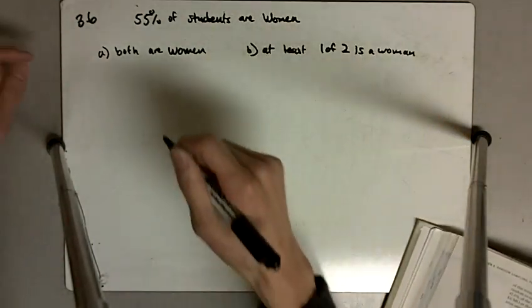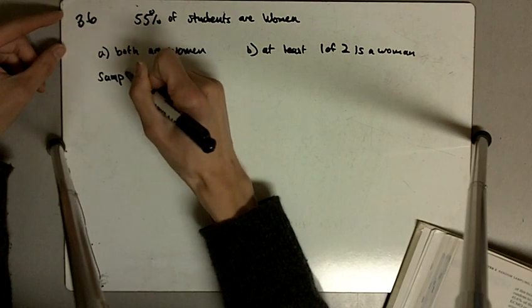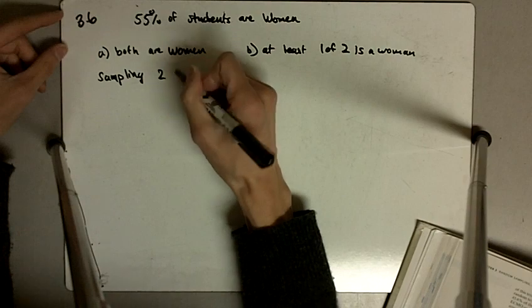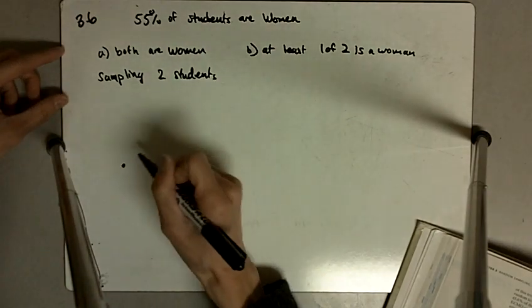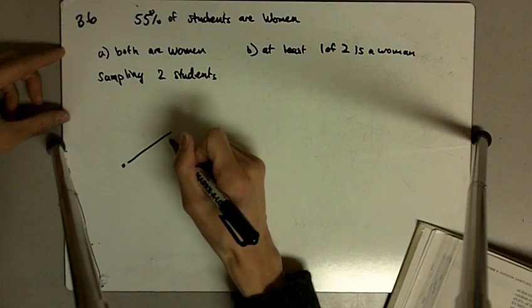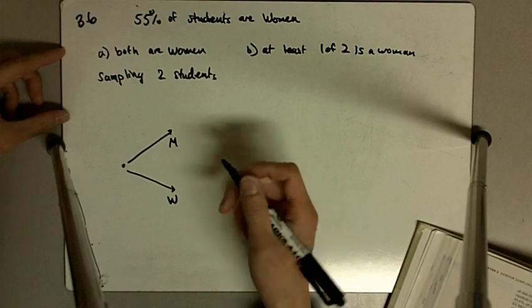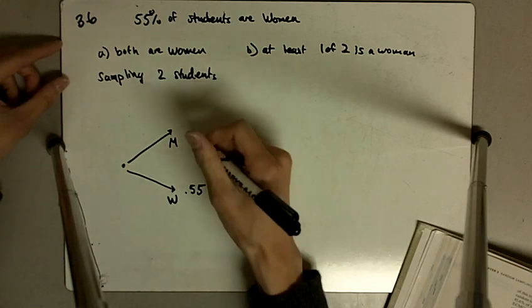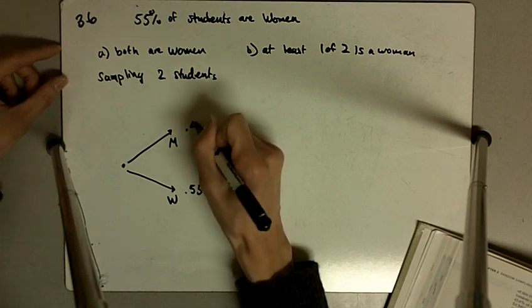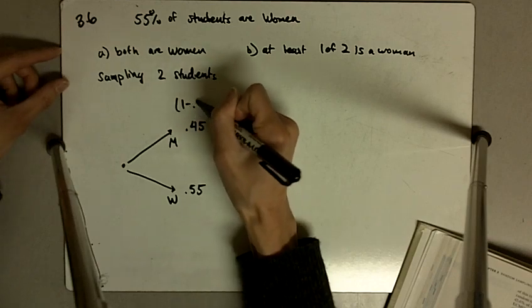I'm going to create a probability tree. In this case, we are randomly sampling two students. The very first student we draw can be either a male, or a man, or it could be a woman. The probability of selecting a woman is 0.55, and the probability of selecting a man is going to be 0.45. That's equivalent to 1 minus 0.55.